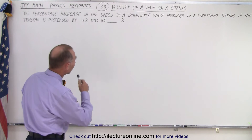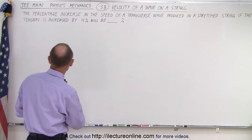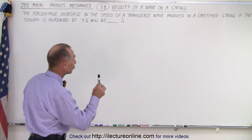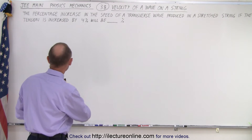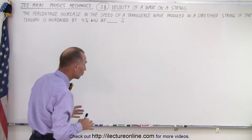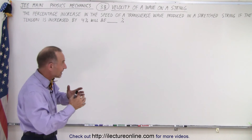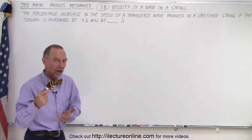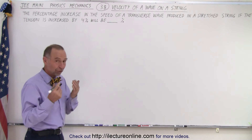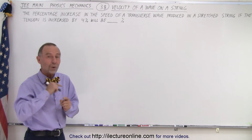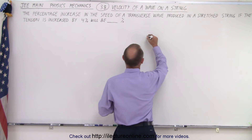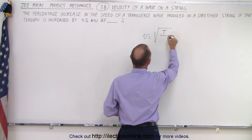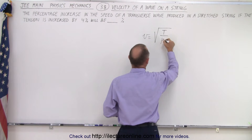Here the question deals with the velocity of a wave on a string. It says: the percentage increase in the speed of a transverse wave produced in a stretched string, if the tension is increased by 4%, will be. So, in other words, we're going to take the tension of a string, increase the tension by 4%, and how will that change the velocity of the wave on that string? You will have to remember the equation for the velocity of a wave on a string, and that is V equals the square root of the tension of the string divided by the mass per unit length, which is written as mu.